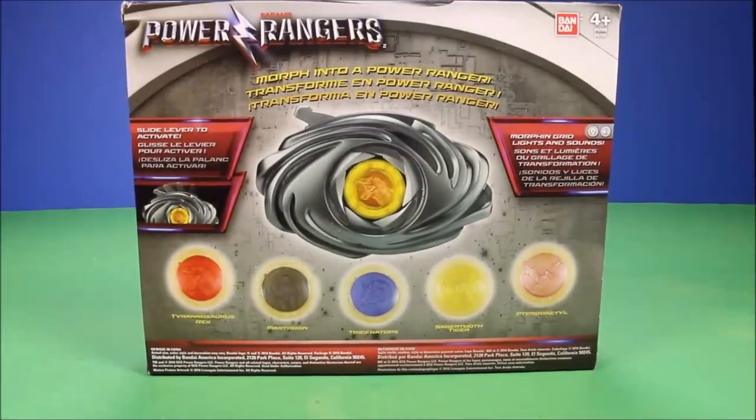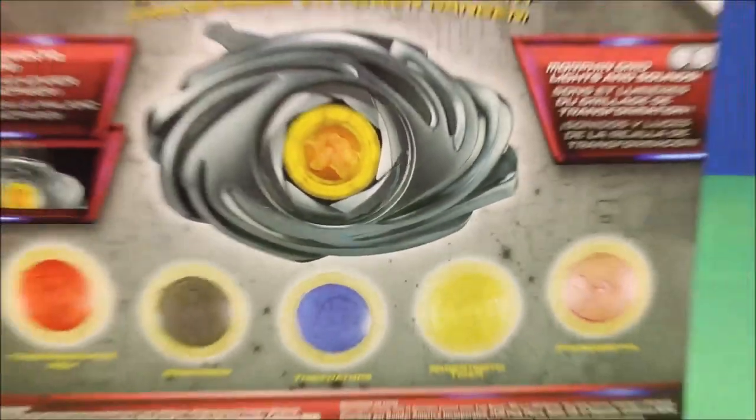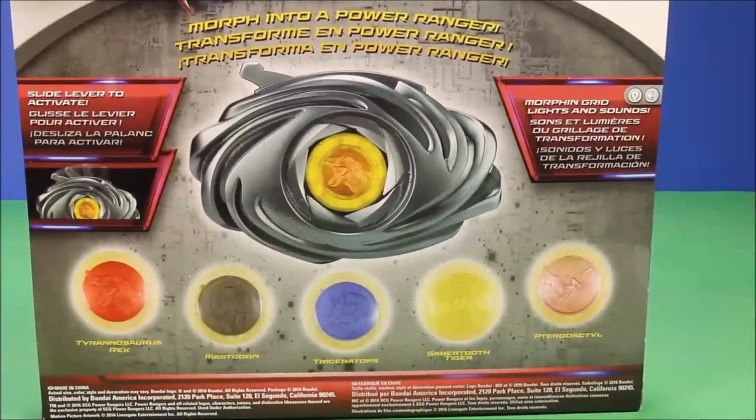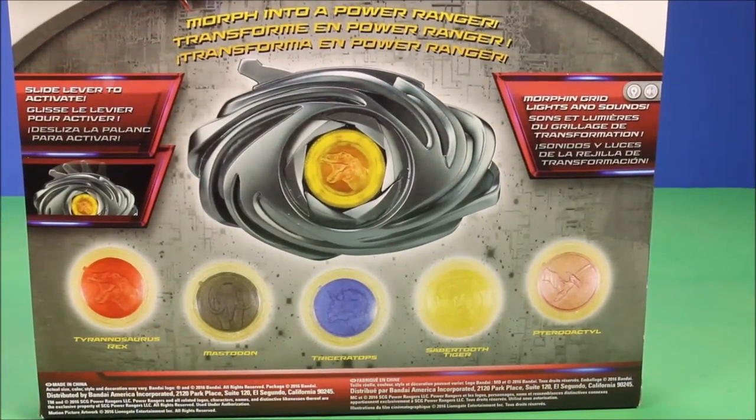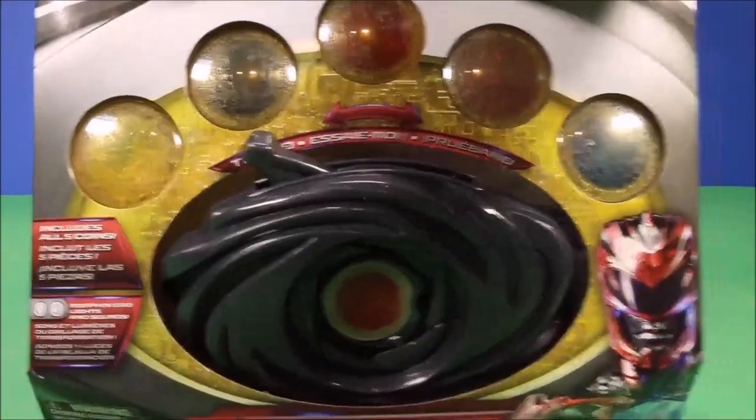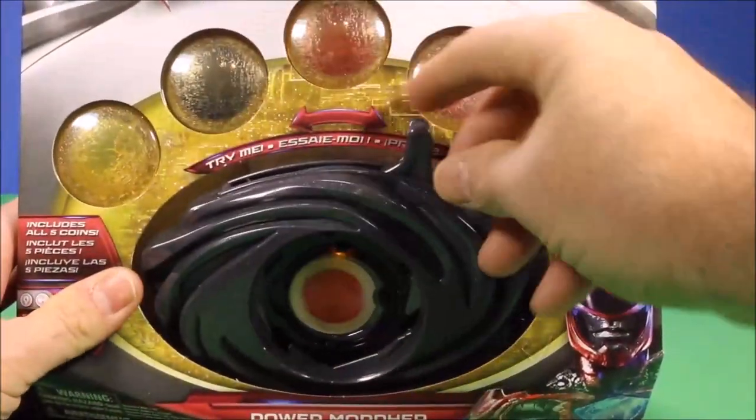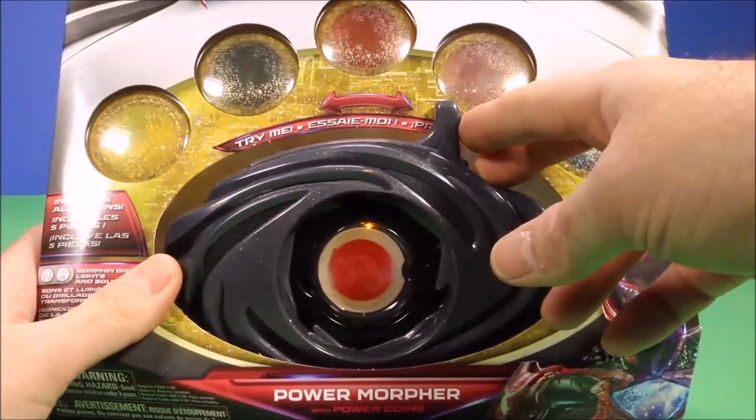Let's check out the back to see what they are. The five coins are the T-Rex coin, the Mastodon, the Triceratops, the Saber-Toothed Tiger, and the Pterodactyl. This is a Morphin Grid with lights and sounds. You slide the lever to activate, and you can even activate it right in the package.